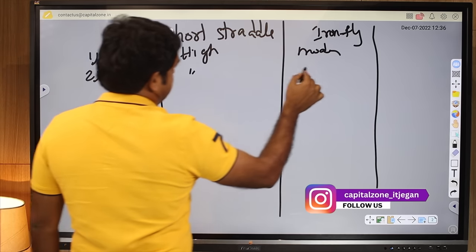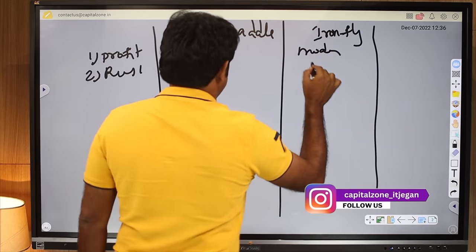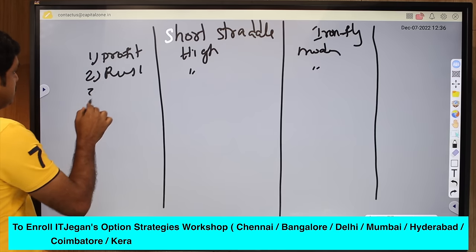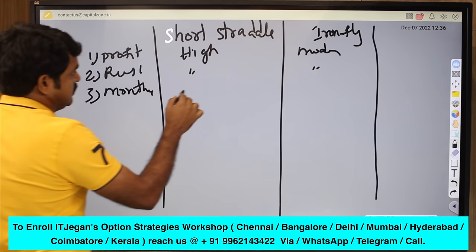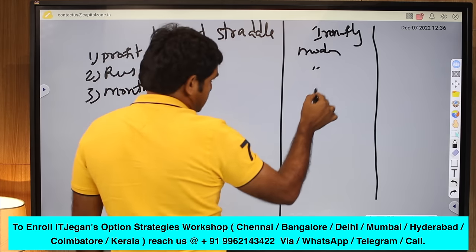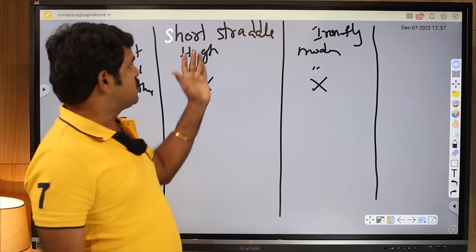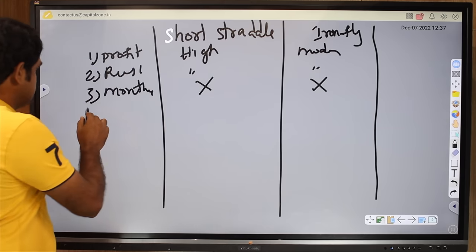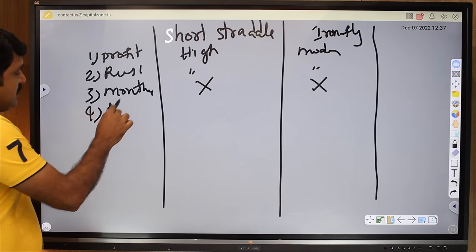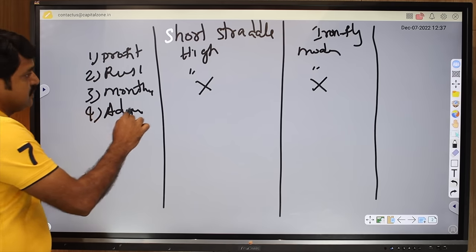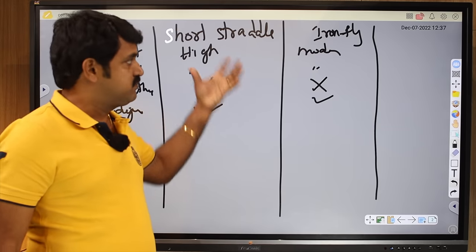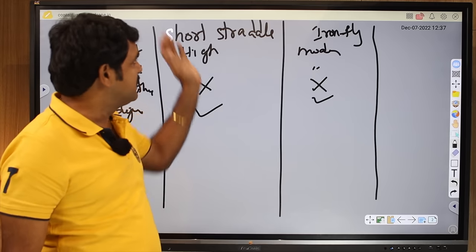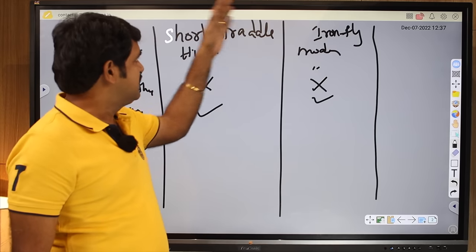And third one: monthly. It doesn't work if you don't do adjustments. Both short straddle and iron fly will not work. If you do adjustments, yes it works and it works. But my opinion, if you are doing adjustments, better do only adjustments, don't take short straddle. For beginners I don't recommend either short straddle or iron fly.